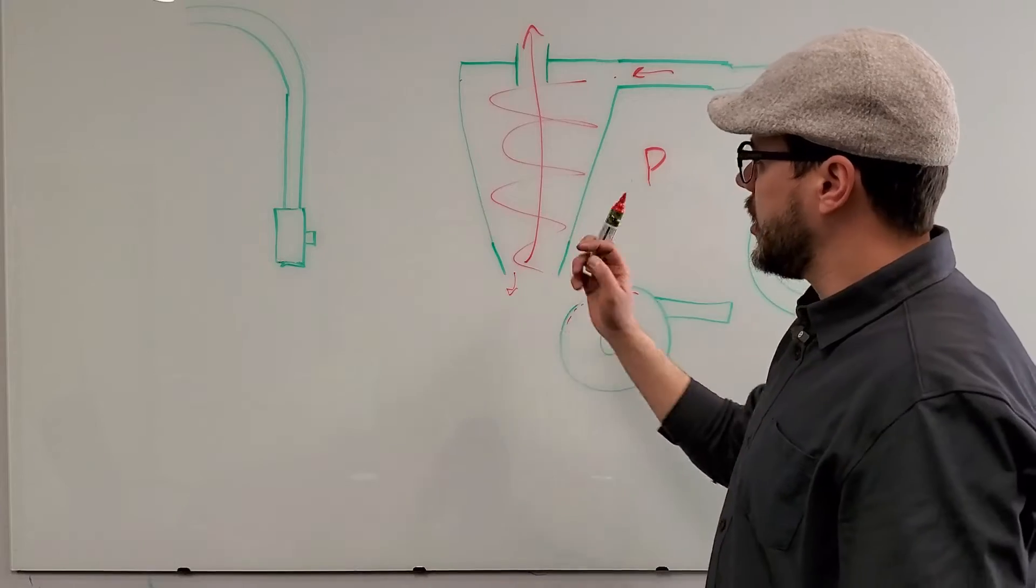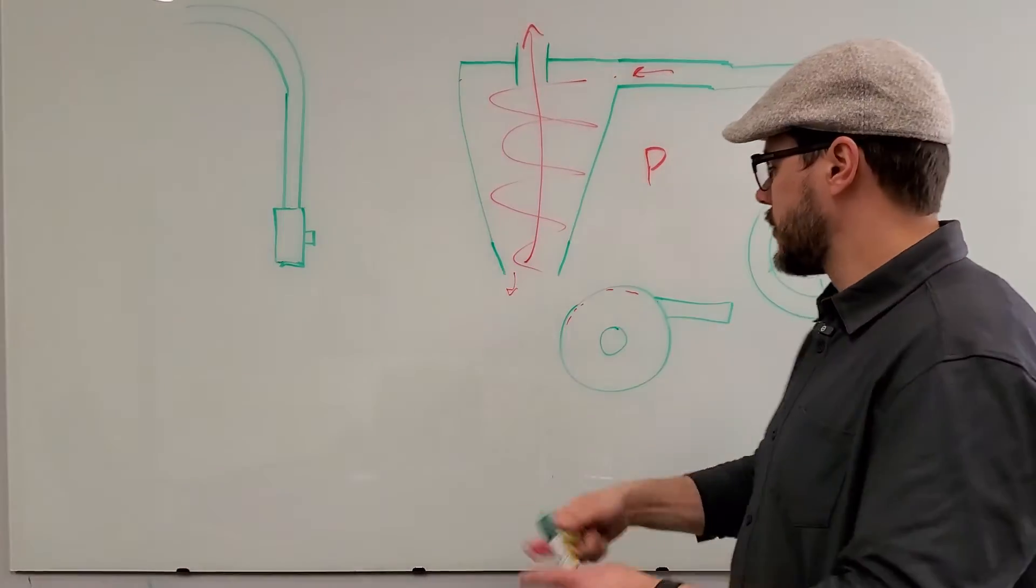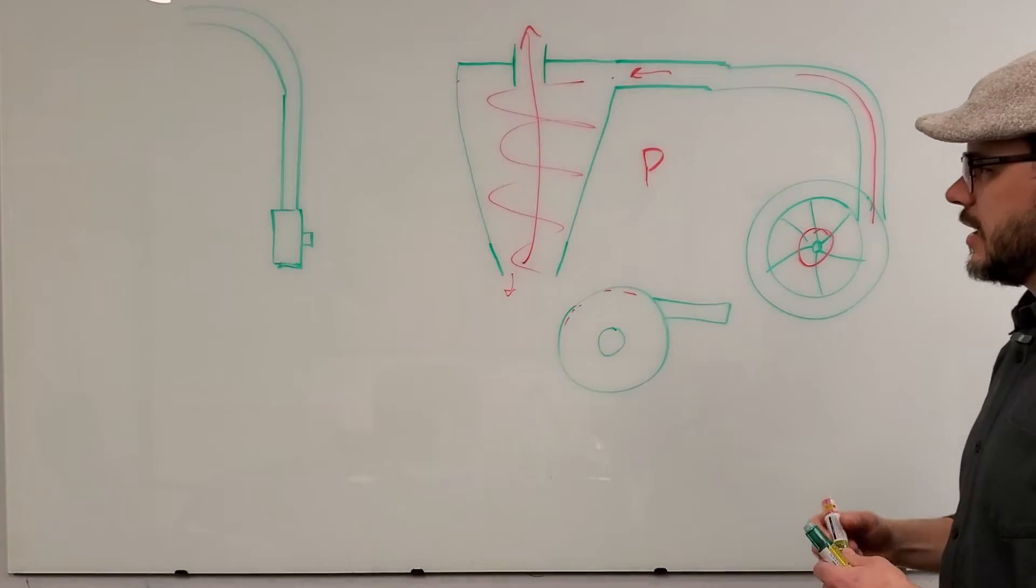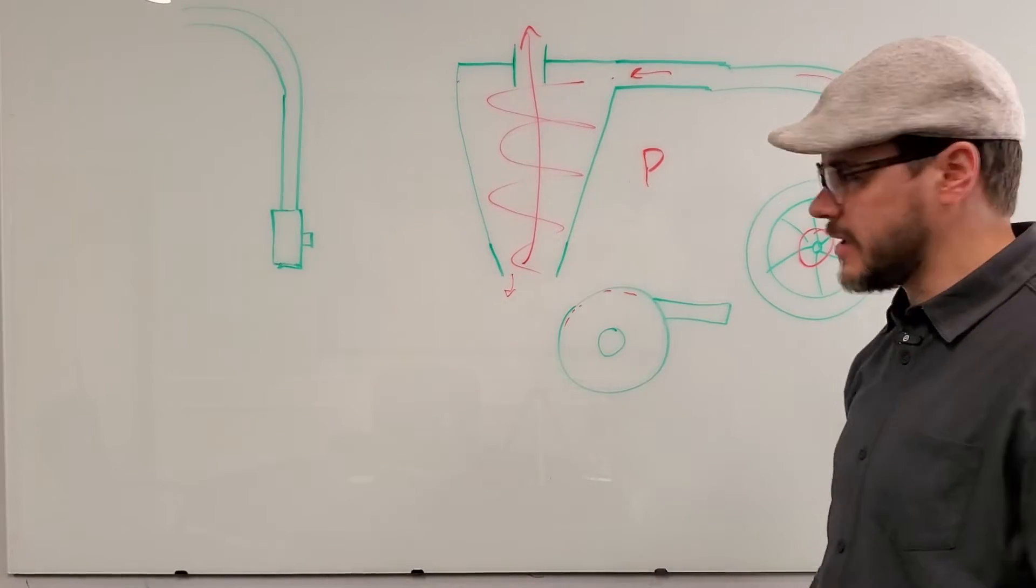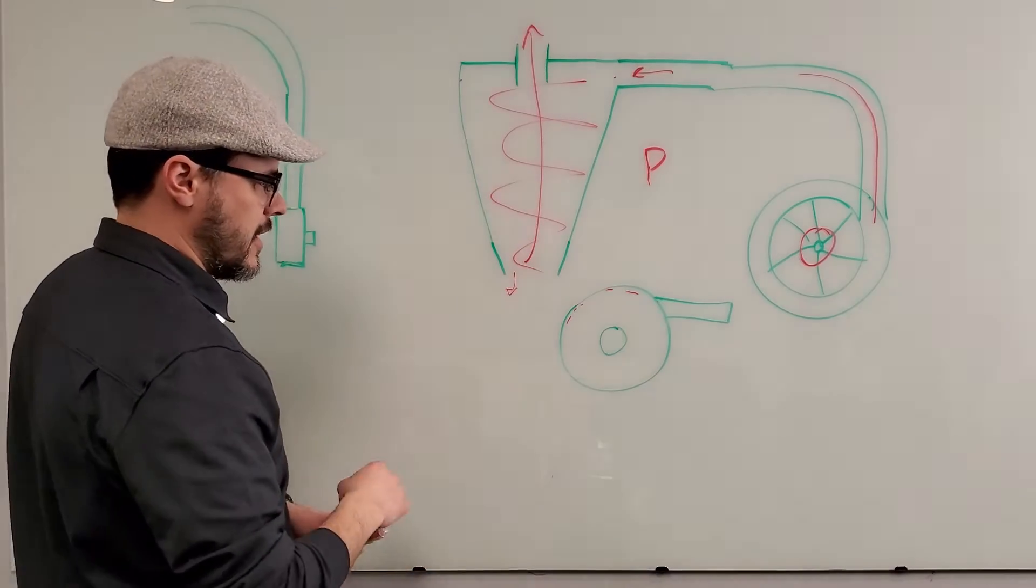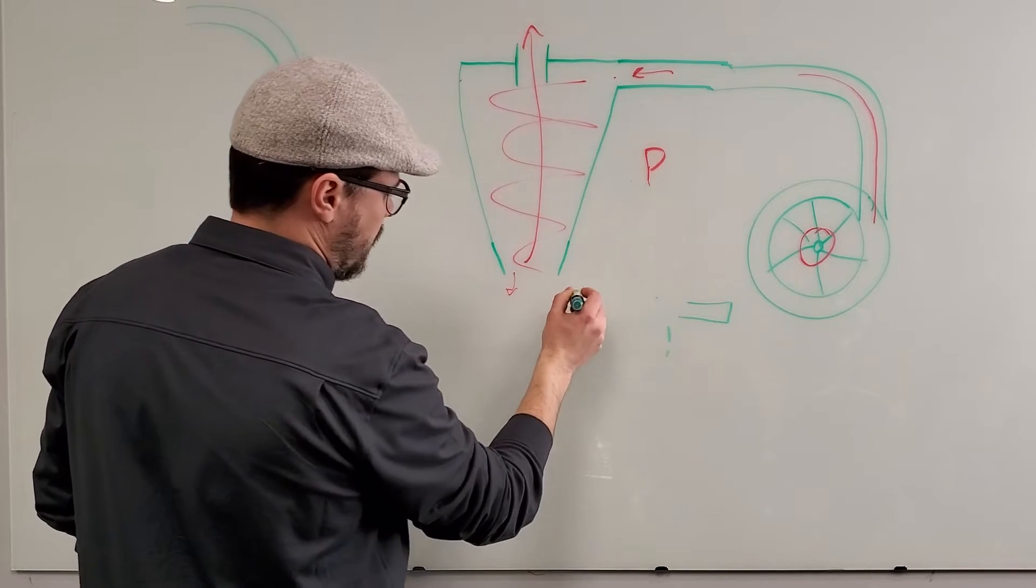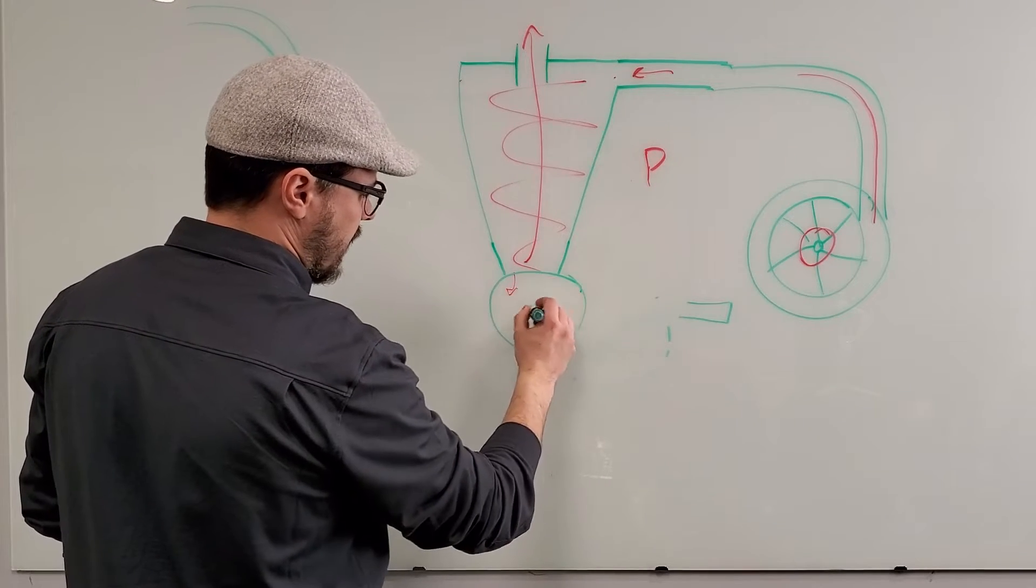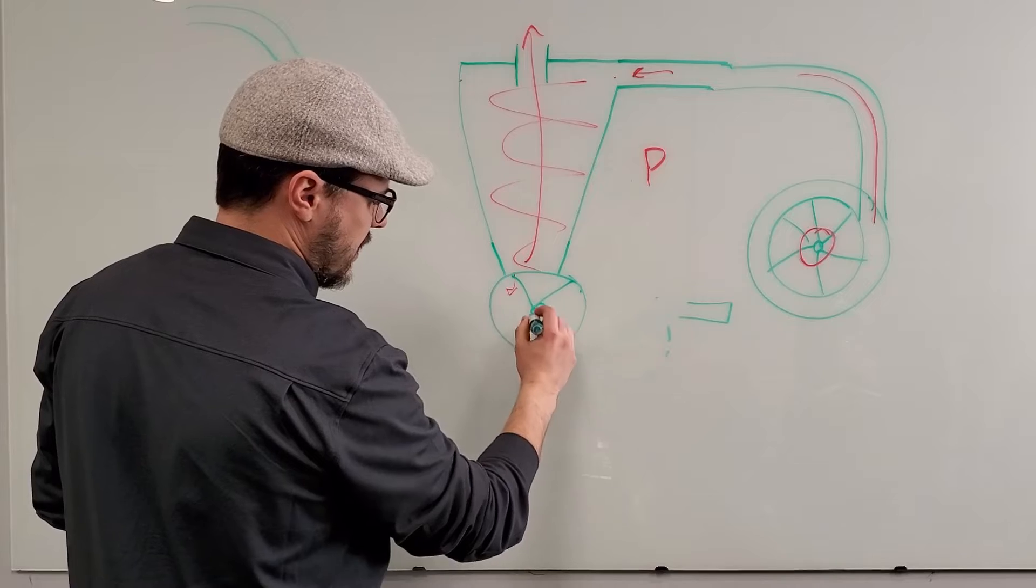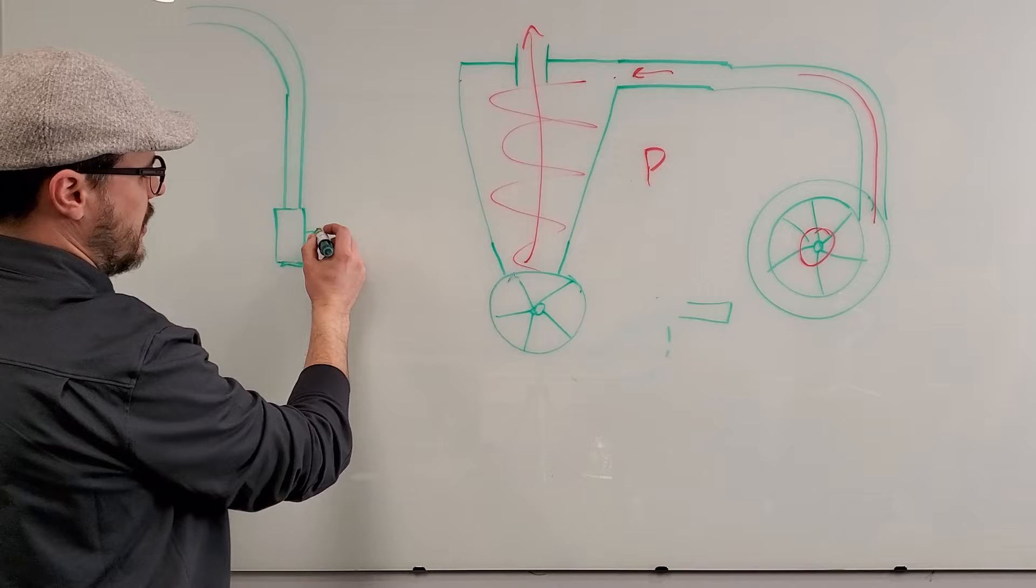Now the other method that we use, and that we'd like to use over this original method, is we like putting this cyclone under a vacuum. The way that we do that is we put an airlock down here. So I'm just going to move this here out of our way. We'll put an airlock here and this has rubber flaps in it.